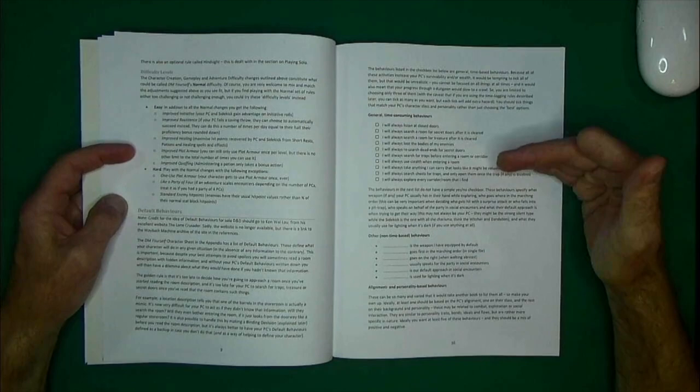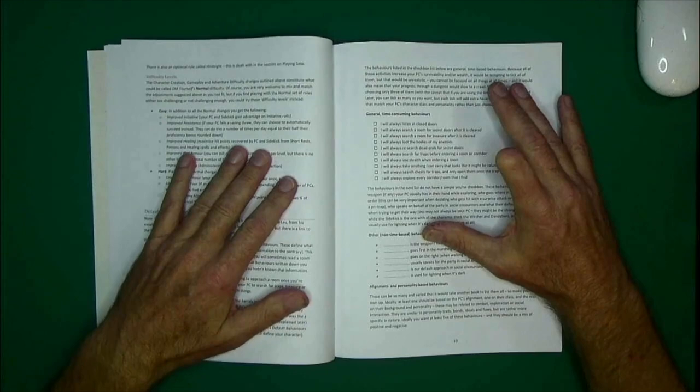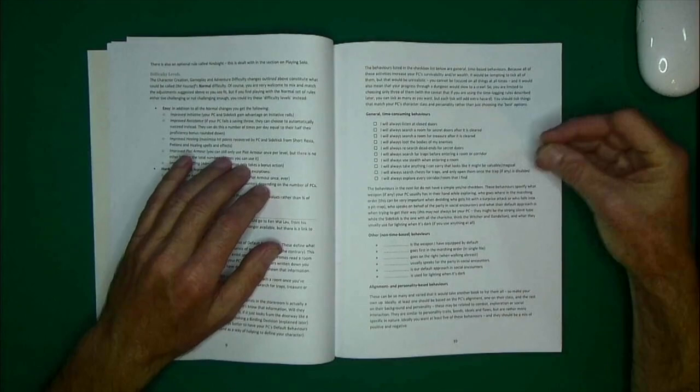But having some pre-written behaviors written out before your adventure about your character's personality, or some traits that they may have. Like a thief may always be checking for certain things, like looting bodies and things like that. And they just always do these things, just like normal people do.